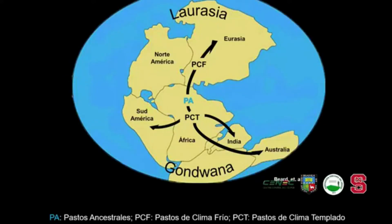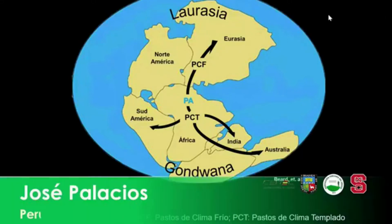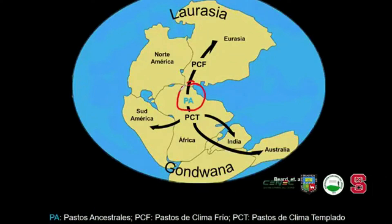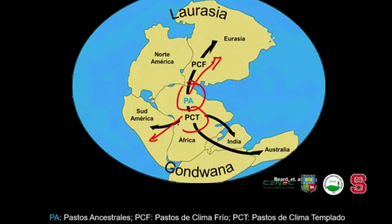Inicialmente existía un gran continente llamado Pangea, que se fue fracturando hasta formar los continentes que hoy conocemos. Los pastos más ancestrales generados en África fueron distribuyéndose por debajo del hemisferio sur hacia Sudamérica, India y Australia, que eran los pastos de climas más calientes, mientras que hacia Asia y Europa se distribuyeron pastos de condiciones de clima más frío.